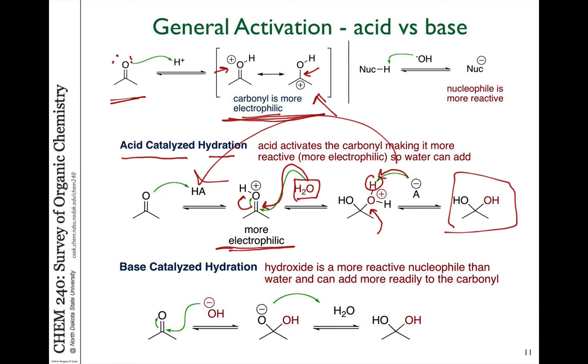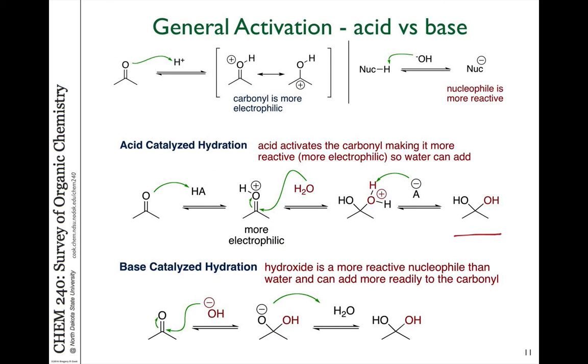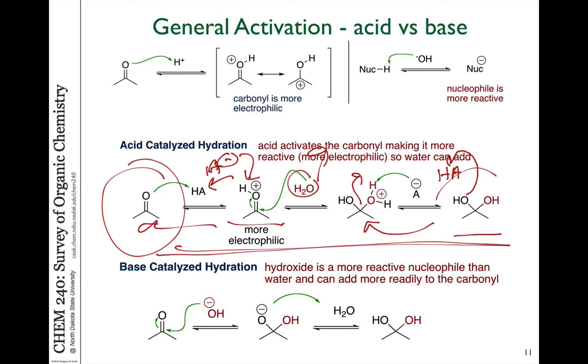Every step in this reaction is reversible. So for example, if you take the hydrated product and add HA to it, you can protonate to get back to this species. This can lose water. Water will come off to go back to this species. And then this can regenerate the acid catalyst and go back to the carbonyl. And the equilibrium will depend on the relative stabilities of the ketone or the hydrate, as well as how much water is present. So you can shift based on Le Chatelier's principle, the reaction from left to right, depending on the conditions.